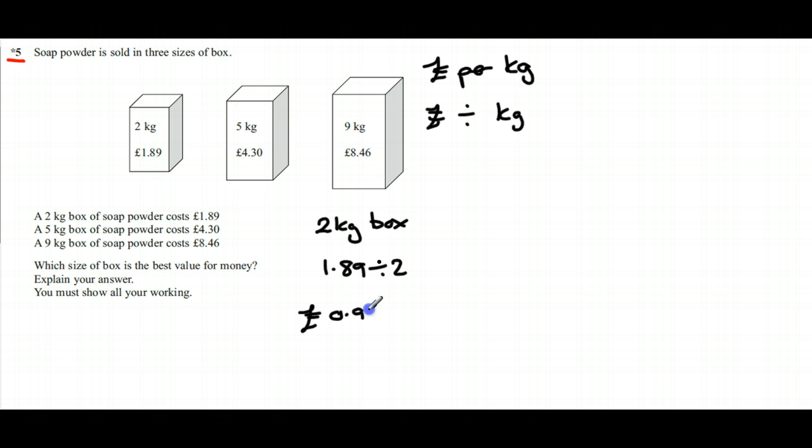For the 5 kilogram box, we'll do £4.30 divided by 5, which gives us 86p per kilogram. And then finally, for the 9 kilogram box, we'll do 8.46 divided by 9, and that's 94 pence per kilogram.